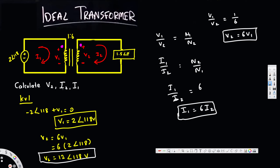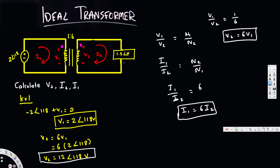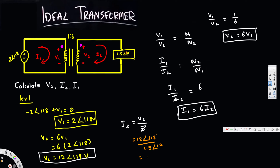Next, we need to find i2. We know that i2 equals v over z, and since we know v2 and there is only one impedance on the secondary side, we write: i2 equals v2 over z equals 12∠118° divided by 1.5∠10°, which gives us i2 equals 8∠108°.